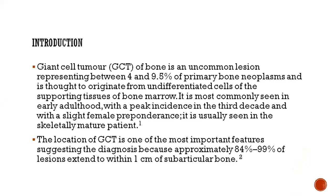The giant cell tumor, or GCT, of the bone is an uncommon lesion representing up to 9.5% of primary bone neoplasms, and it is thought to originate from the undifferentiated cells of the supporting tissue of bone marrow.